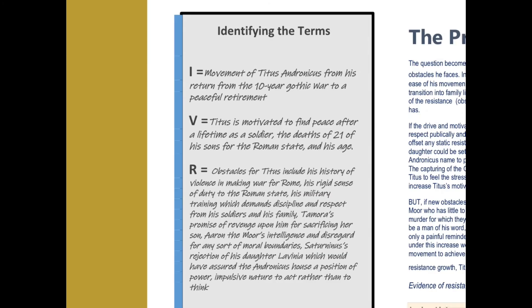I'm going to identify his current as the movement of Titus Andronicus from his return from ten-year Gothic war to a peaceful retirement. The voltage, the motivation he has, is to find peace after a lifetime as a soldier. He doesn't want the action anymore. The deaths of the 21 sons have weighed heavily on him and he's getting older. These are all motivations that he might have to see this flow, this movement from where he is as decorated war hero to peaceful retired army general.